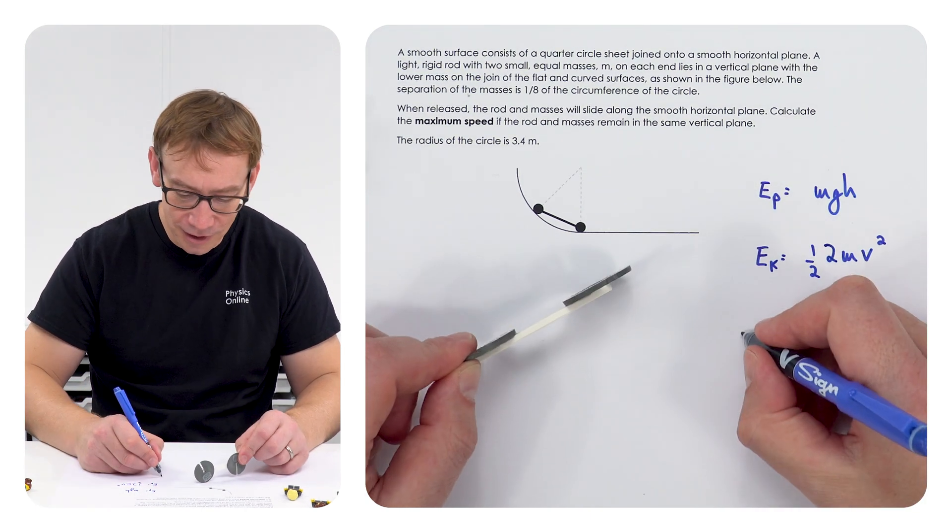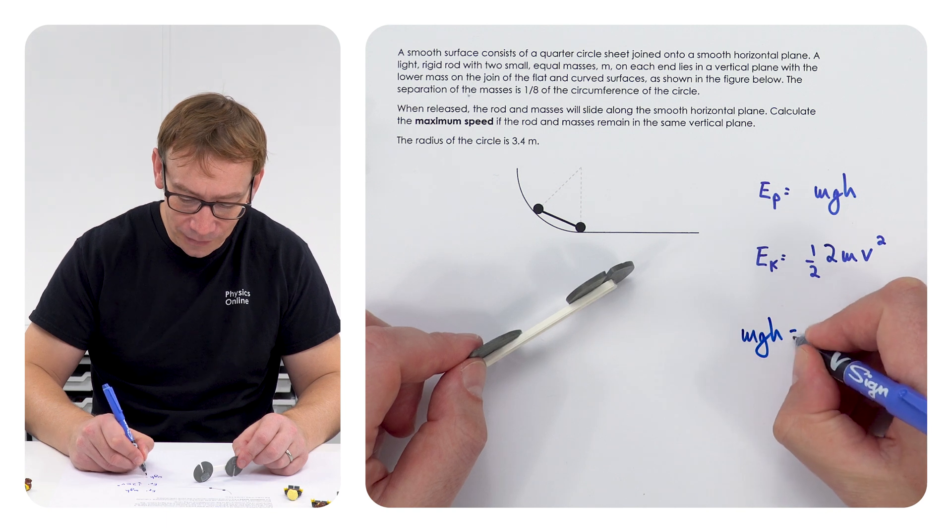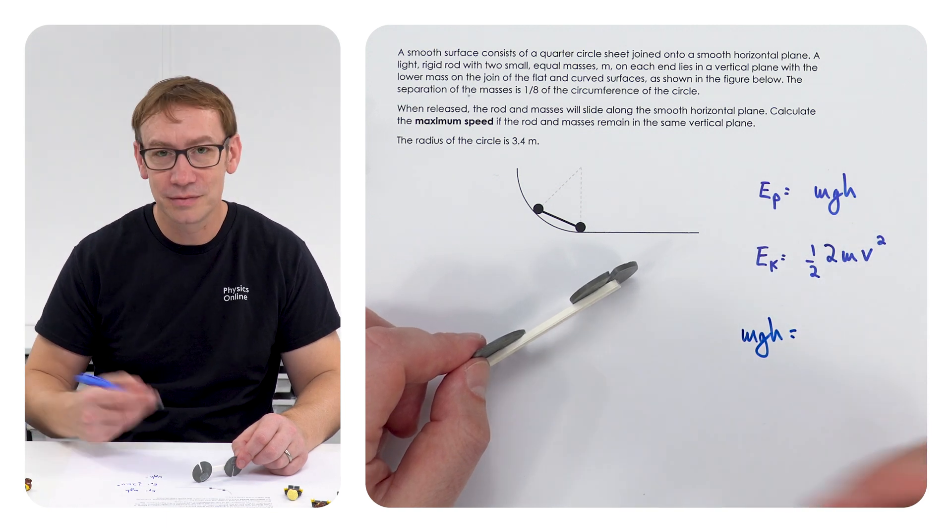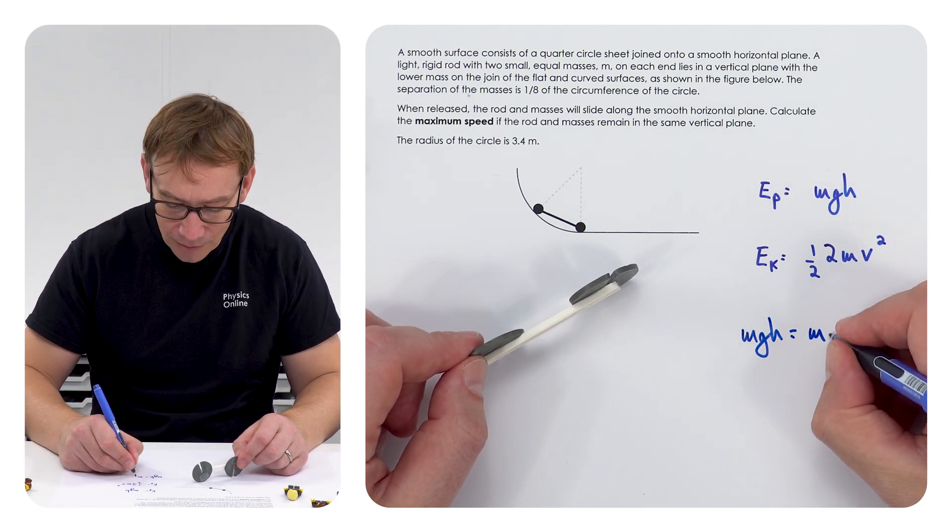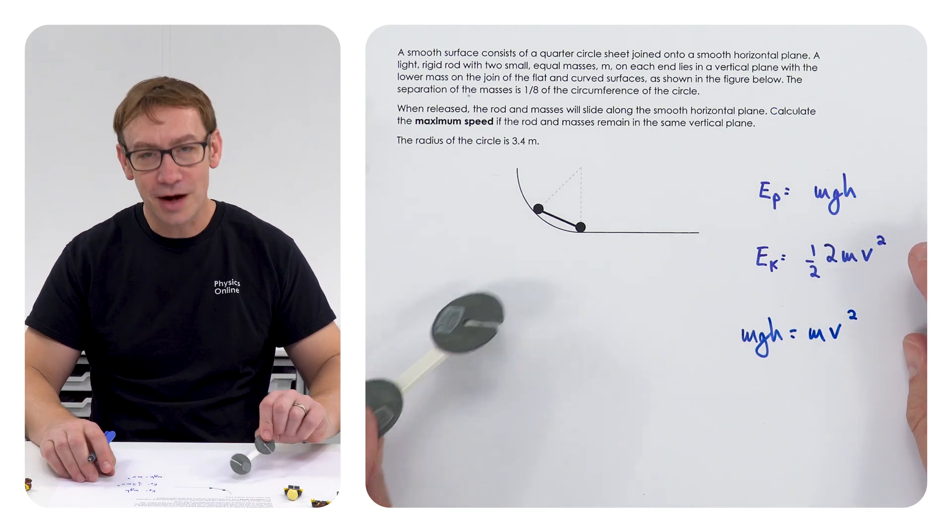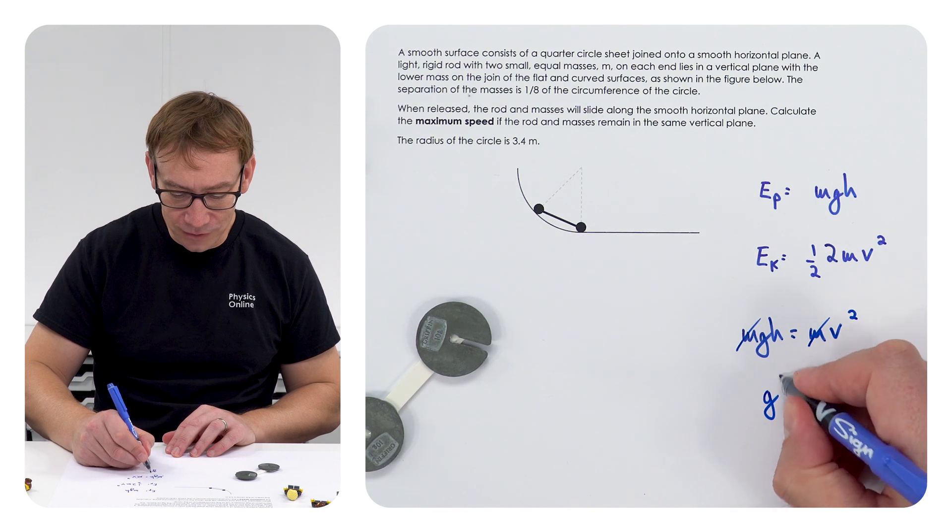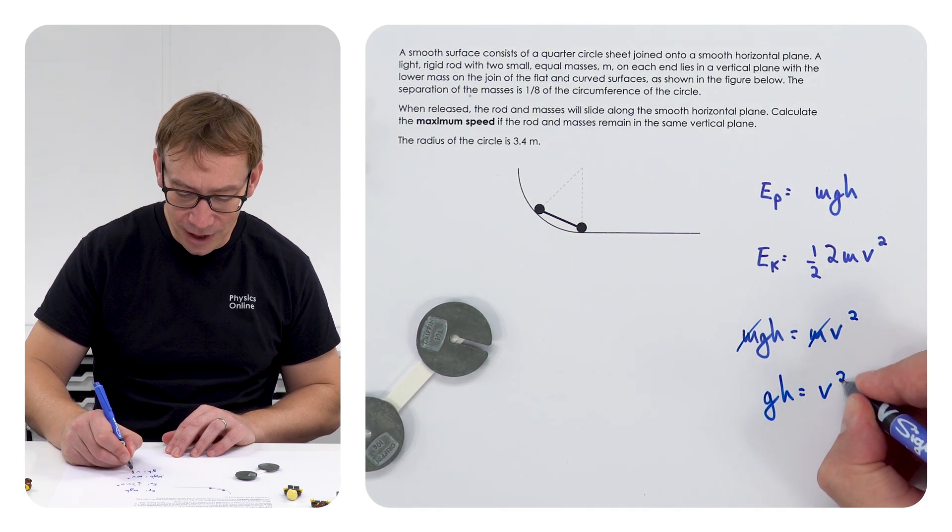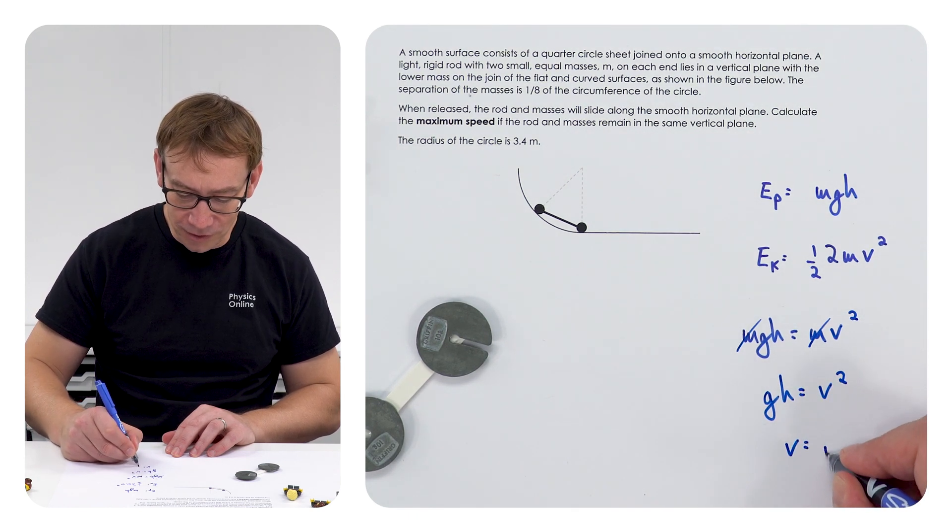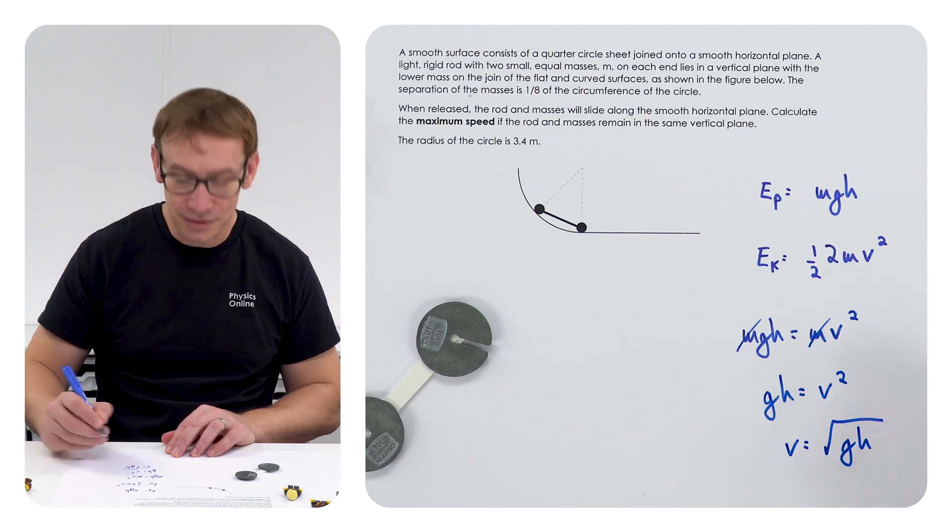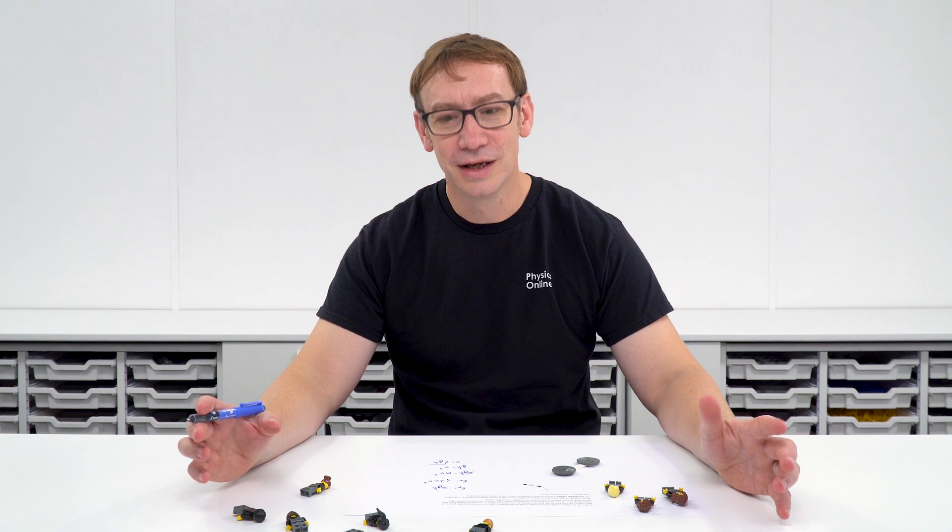We can equate the two together to say that MGH equals half times 2, which is just 1MV squared, and now we can see that the M's cancel on both sides. So GH equals V squared, or V equals the square root of GH. Now of course we know the gravitational field strength, it's 9.81. What about the value of H?